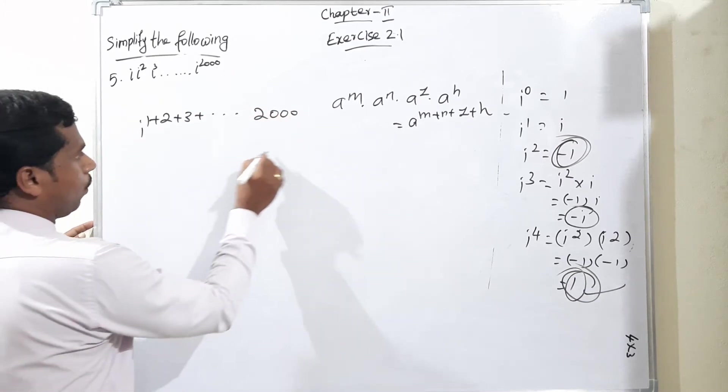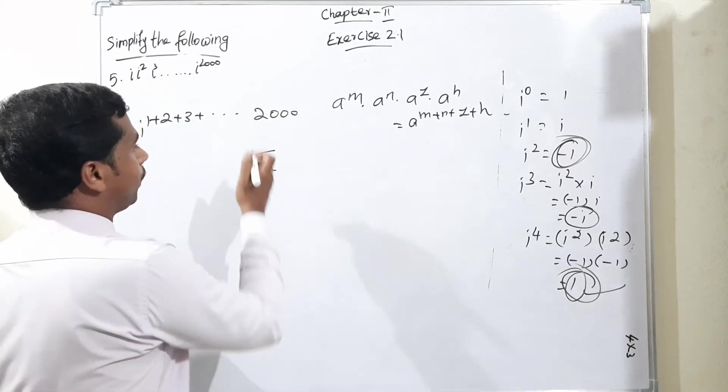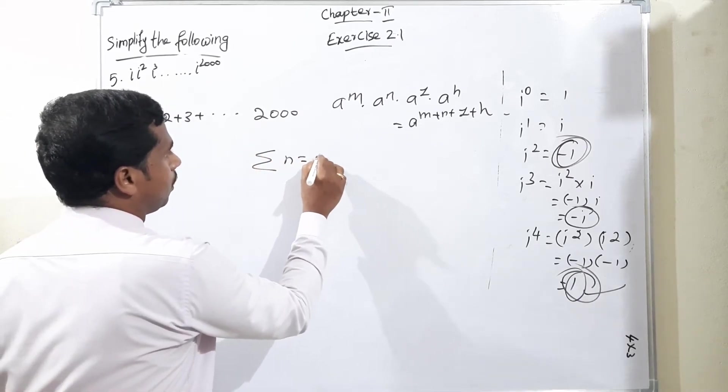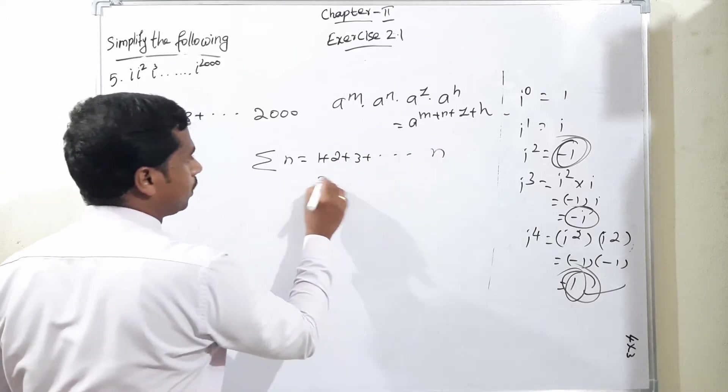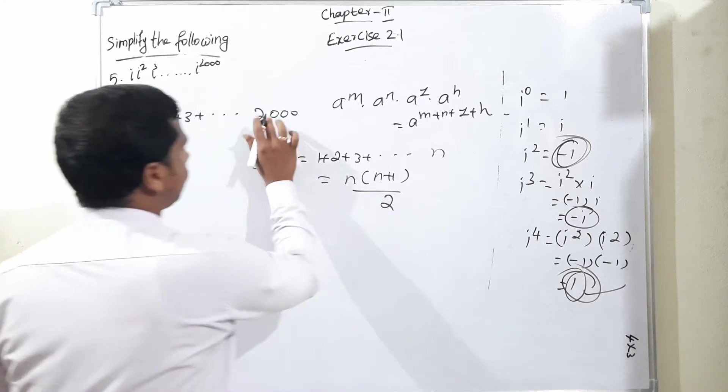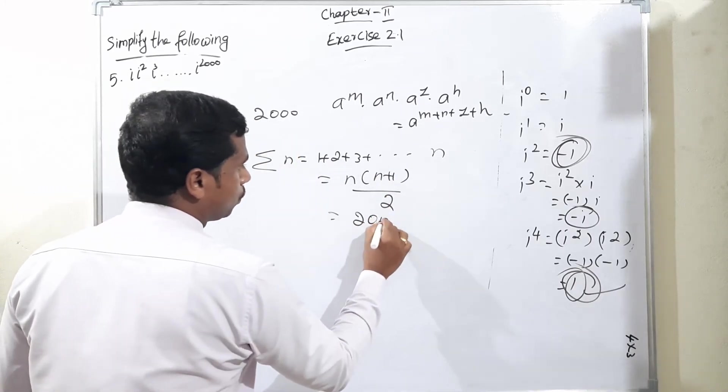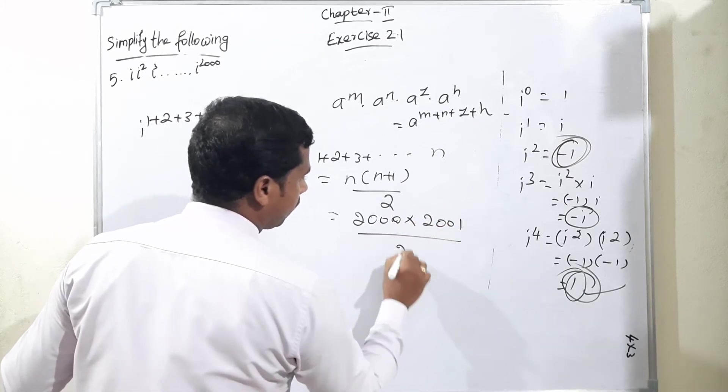So we have one algebraic formula. In lower class we already learned regarding this summation of n. 1 plus 2 plus 3 plus dot dot dot n means the formula is n times n plus 1 by two. So n is equal to 2000 means 2000 times 2001 divided by two.